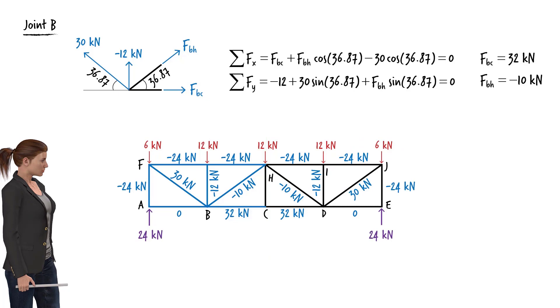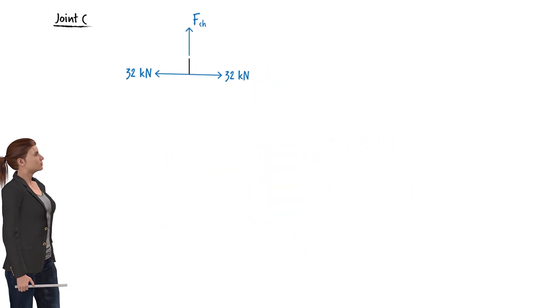The only remaining member with an unknown force is CH. To determine FCH, we can use the free body diagram of joint C. Since the sum of the forces in the y direction must be zero, FCH equals zero.